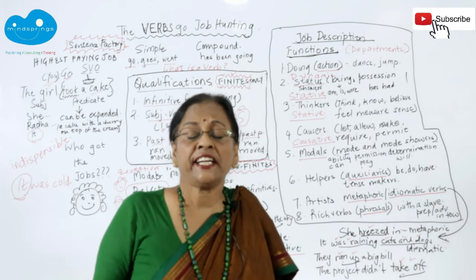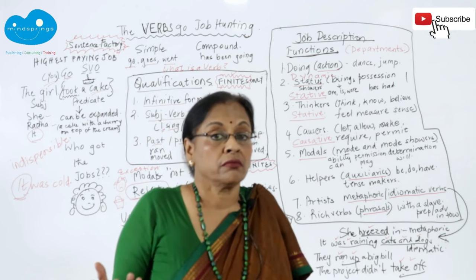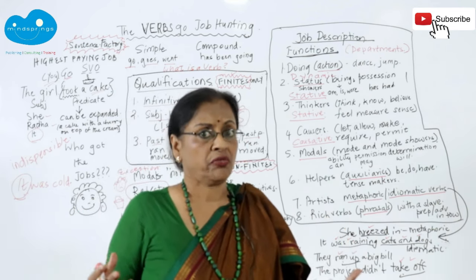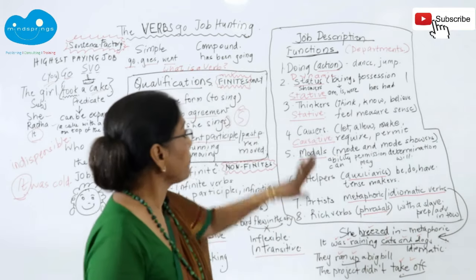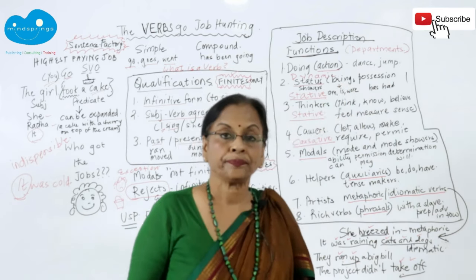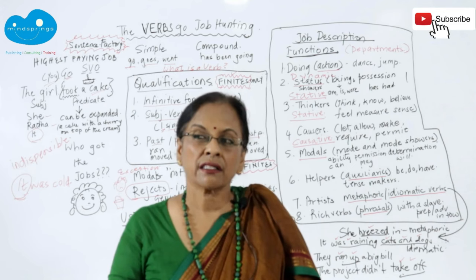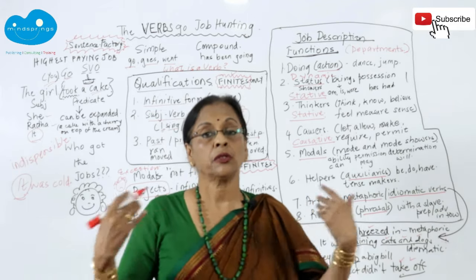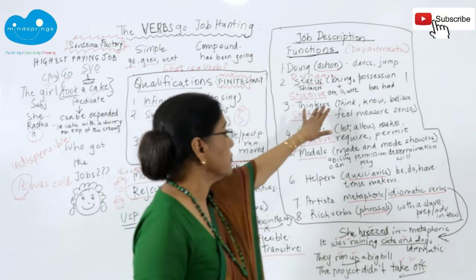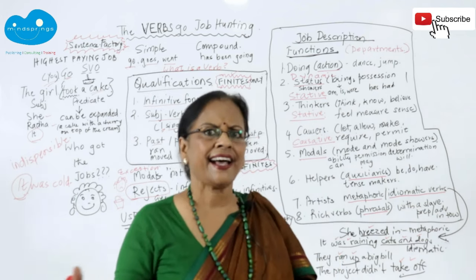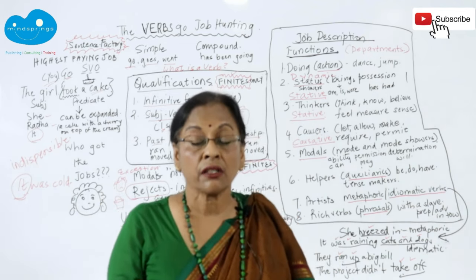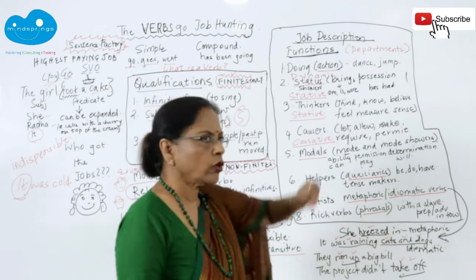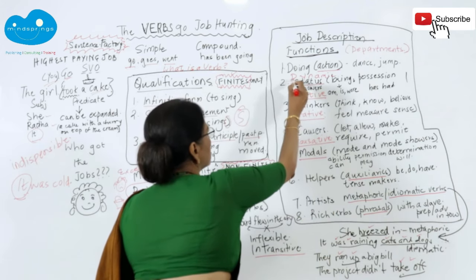Another group came in and said, 'We are not action verbs — we state things and show status.' They have verbs of being and position. 'I am a teacher, he is a carpenter' — using am, is, was, were — making statements about feelings or professions. Or 'he has a diamond ring' — again stating something. Has cannot dance or jump like action verbs, but they are important. These are called stative verbs.